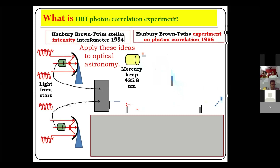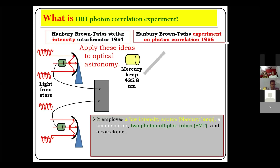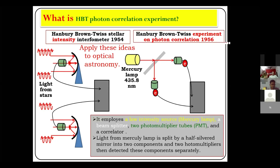They used a mercury lamp which emits visible light in the wavelength range of 435.8 nanometers. So instead of radio waves, they were now using visible light. This visible light is incident on a 50-50 beam splitter. The light coming from this beam splitter — one transmitted and one reflected — is received by two photomultiplier tubes. The signal from these two photomultiplier tubes is fed to a correlator, which gives the time-average value of the product of the current. Again, second-order correlation was measured in this apparatus.